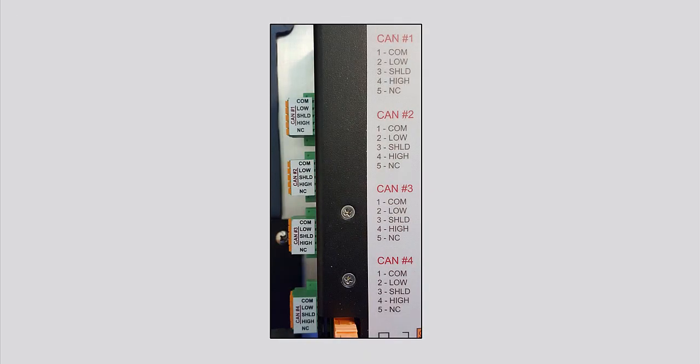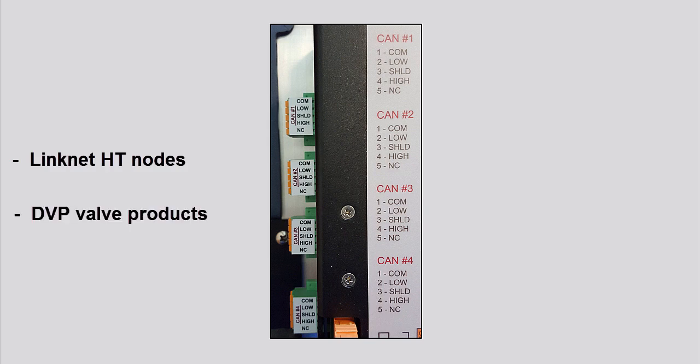The second available communication type is CAN. Four isolated CAN ports are available for general communications, as well as simplex or redundant distributed control. Compatible devices include Linknet HT nodes, DVP valve products, and the two Woodward power management devices, MFR300 and LS5.